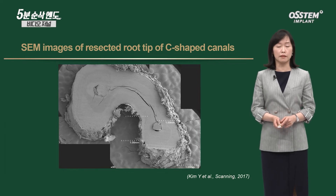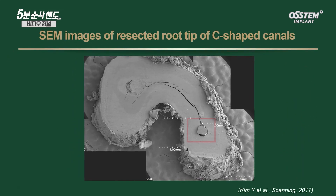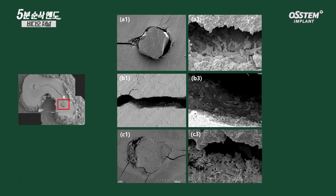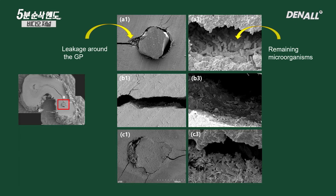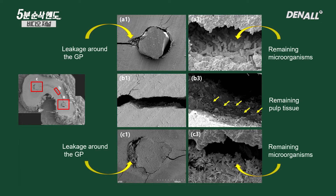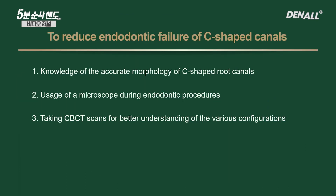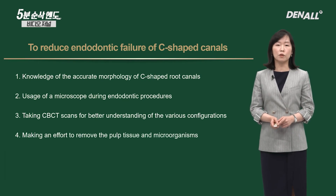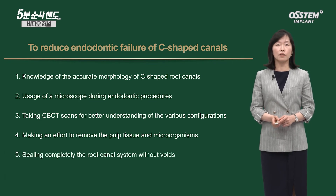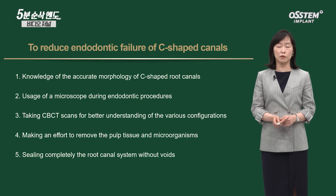In the case of this patient, as I did surgery, I took some of the resected root to figure out the cause. This shows GP filling, isthmus, and the GP filling on the other side. When magnified, you can see that although filling is done nicely, there's leakage. If you magnify even further, there's residual bacteria on the isthmus area. If you don't magnify as much, it looks clean, but there's residual pulp. On the other side of the GP filling area, there's also leakage and around it there are microorganisms.